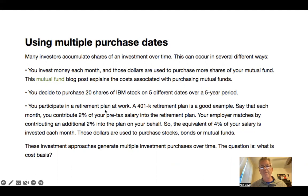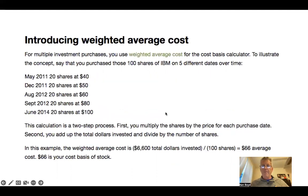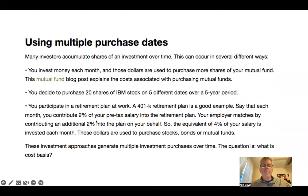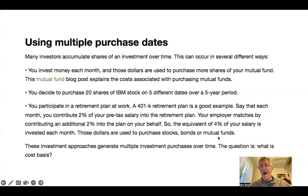Finally, let's say you participate in your retirement plan — a 401k is a good example. Let's say that each month you contribute 2% of your pre-tax salary into your retirement plan, and your employer matches an additional 2% on your behalf. So you're investing the equivalent of 4% of your salary each month into stocks, bonds, or mutual funds — buying over time on multiple purchase dates. So the question is: what is the cost basis under this situation?